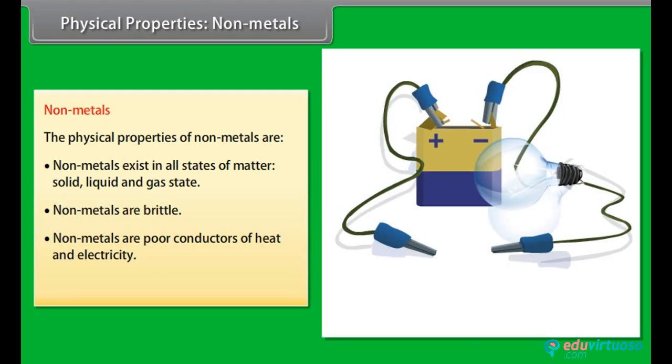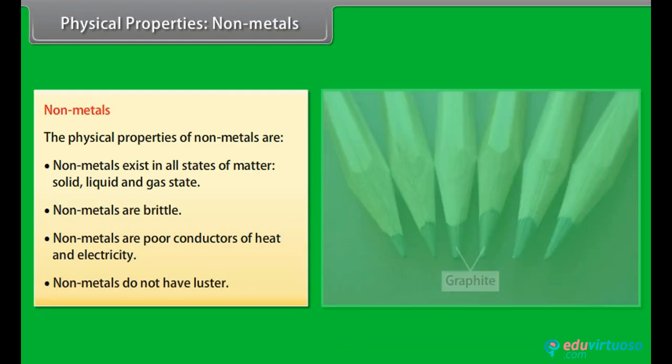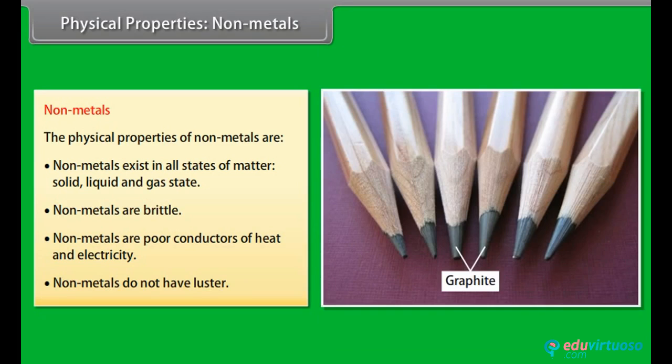Poor conductors of heat and electricity. Non-metals are poor conductors of heat and electricity. Graphite: Carbon is an exception as it is a good conductor of electricity and is used in making electrodes. Luster: Non-metals have no metallic luster and do not reflect light.